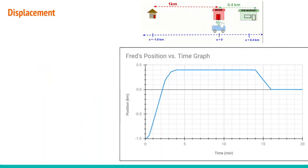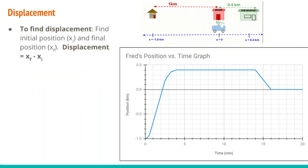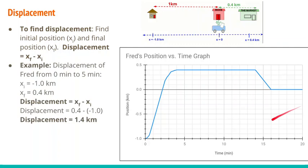We can also find displacement from a position versus time graph. To do that, we just need to find the initial position and the final position. Remember, the path doesn't matter for displacement. We use the equation: displacement equals final position minus initial position. For Fred from 0 to 5 minutes, his initial position is negative 1 kilometer and his final position is 0.4 kilometers. So displacement equals 0.4 minus negative 1, which is 1.4 kilometers.